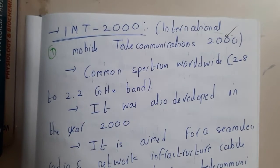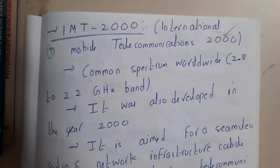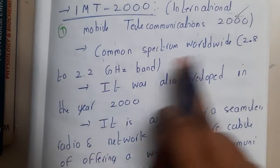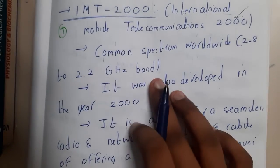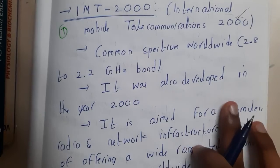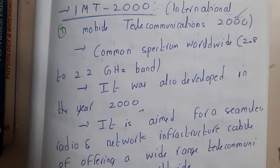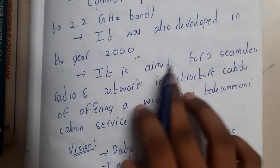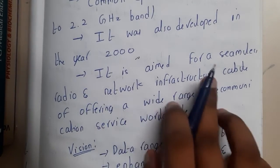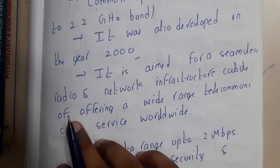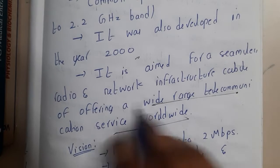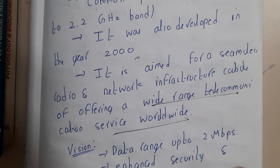IMT 2000 uses a common spectrum worldwide, so basically you can talk to your friend who is located in the US or somewhere else. It uses 2.2 gigahertz bandwidth. It is aimed for a seamless radio and network infrastructure capable of offering a worldwide range telecommunication service.